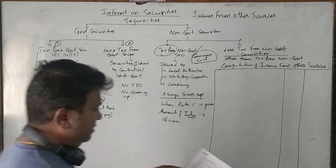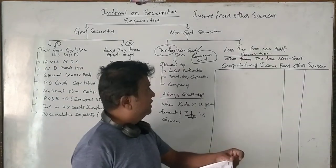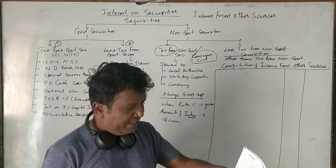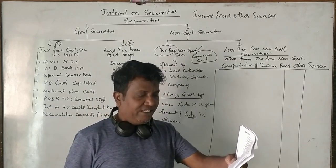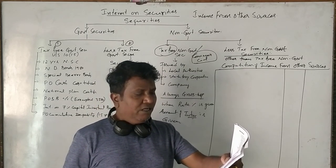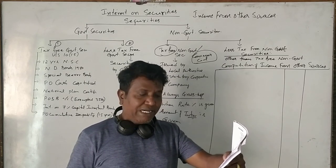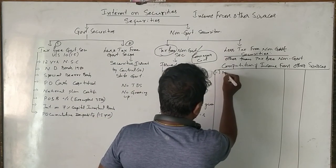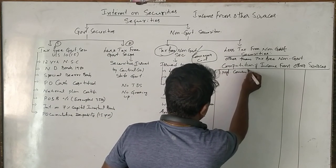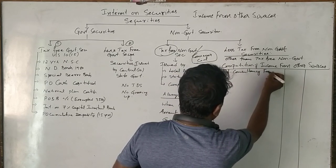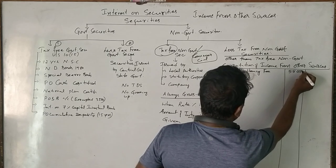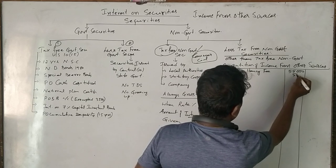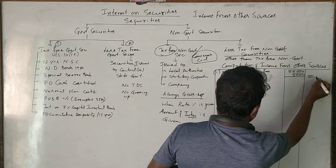We will now compute income from other sources. Miss Roshini gave management consultancy services to entrepreneurs. During the year she received 55,000 rupees from clients and incurred 5,000 rupees of expenses. So management consultancy fee is 55,000 rupees, less admissible expenses of 5,000 rupees, giving a taxable amount of 50,000 rupees.